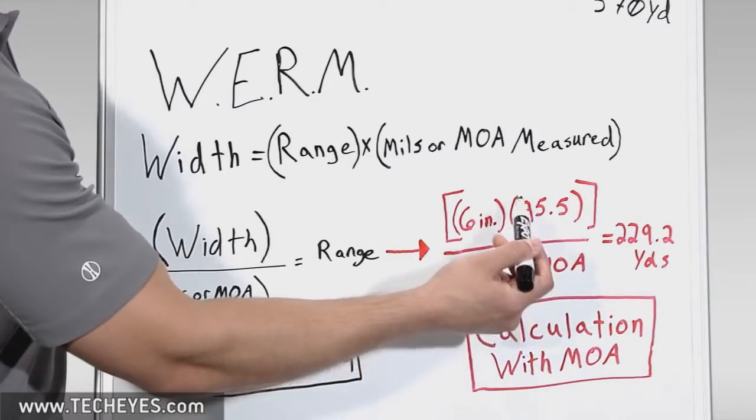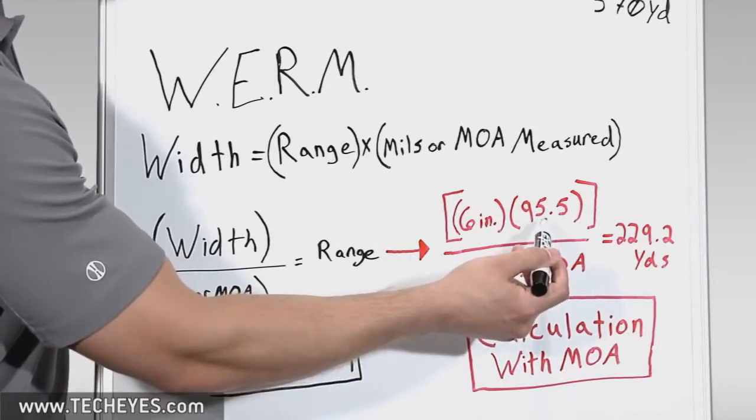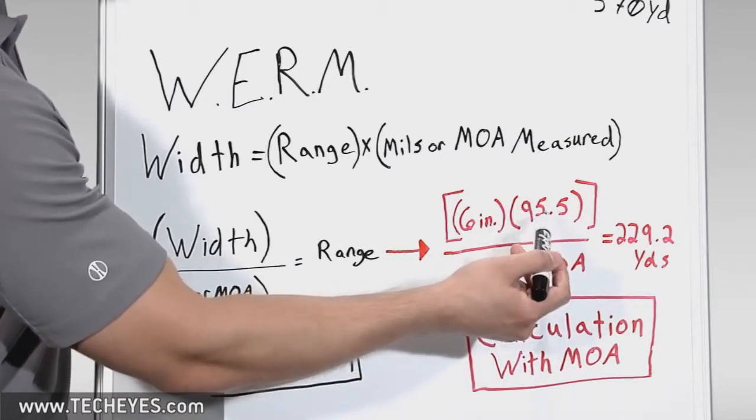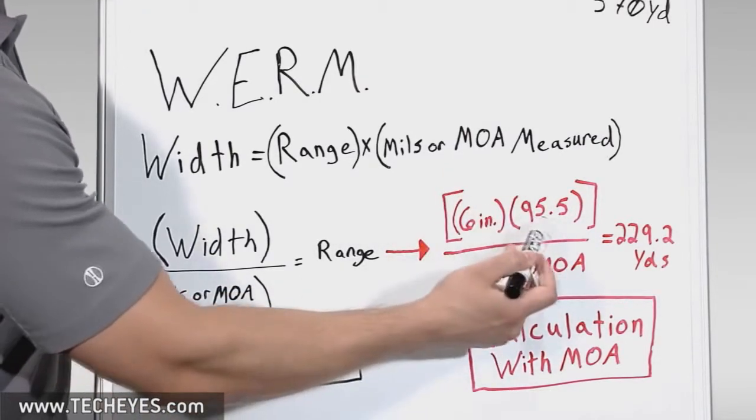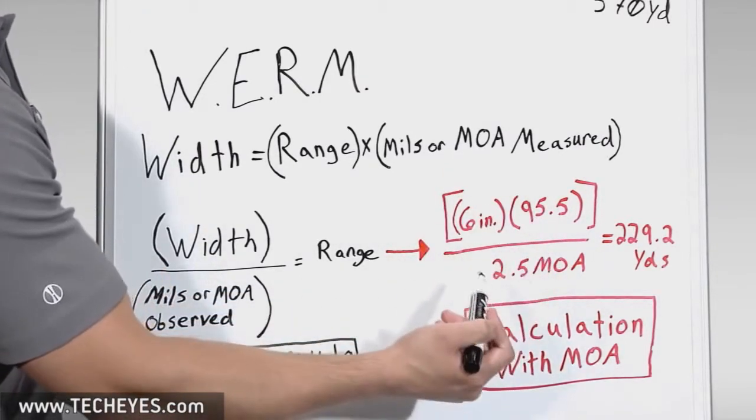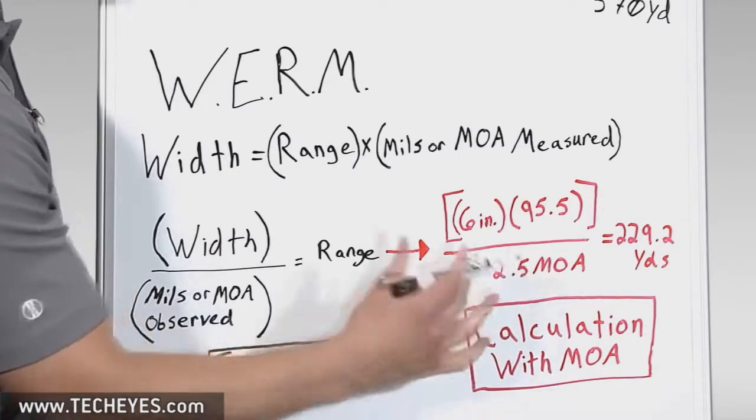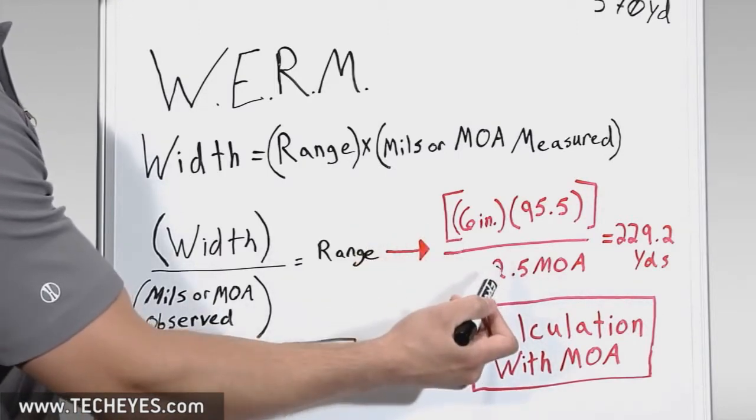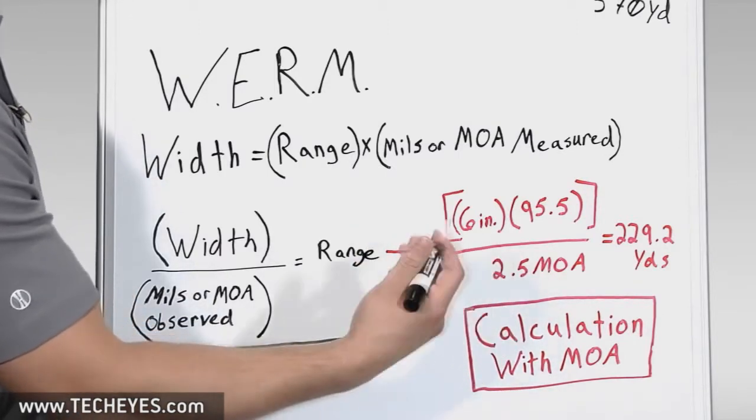Some shooters and observers will use 100 in place of 95.5 for the sake of simplicity, but keep in mind that if you leave this number, you will experience a 5% overestimation in yardage, and this needs to be compensated for down the road, or you will experience an inaccurate reading.